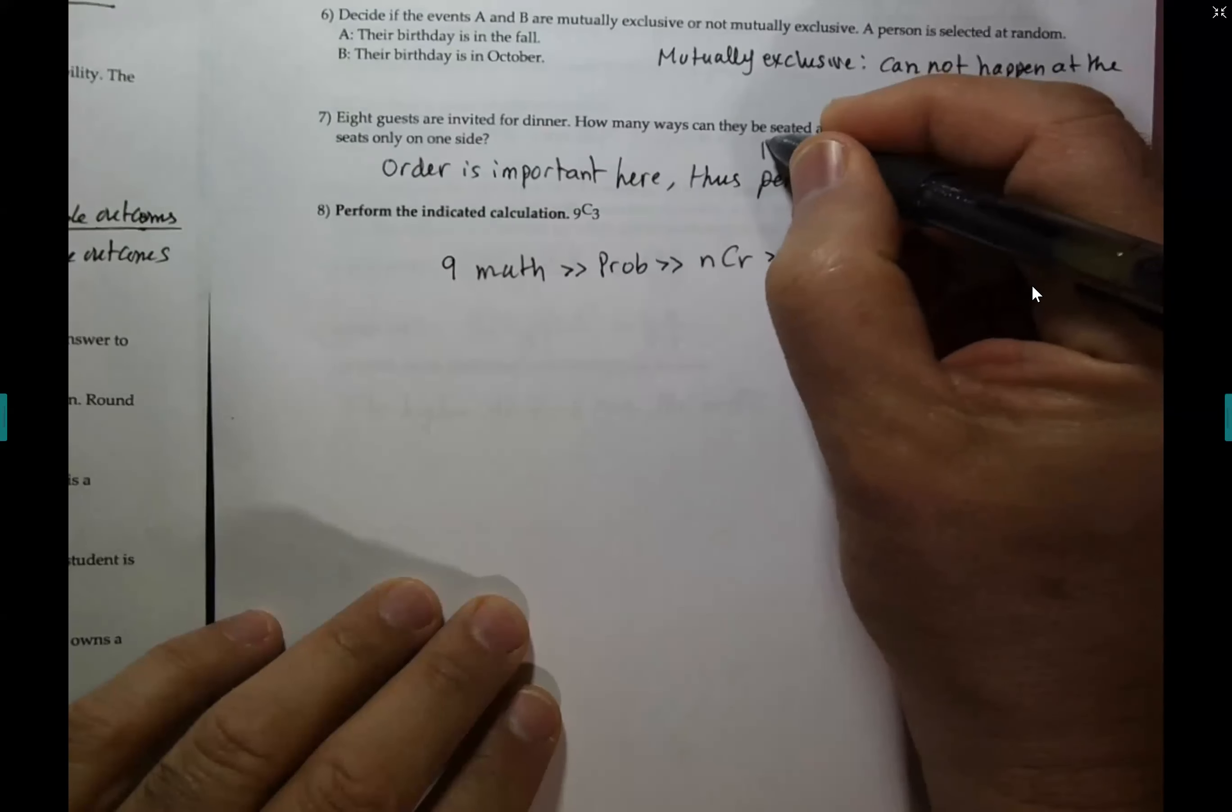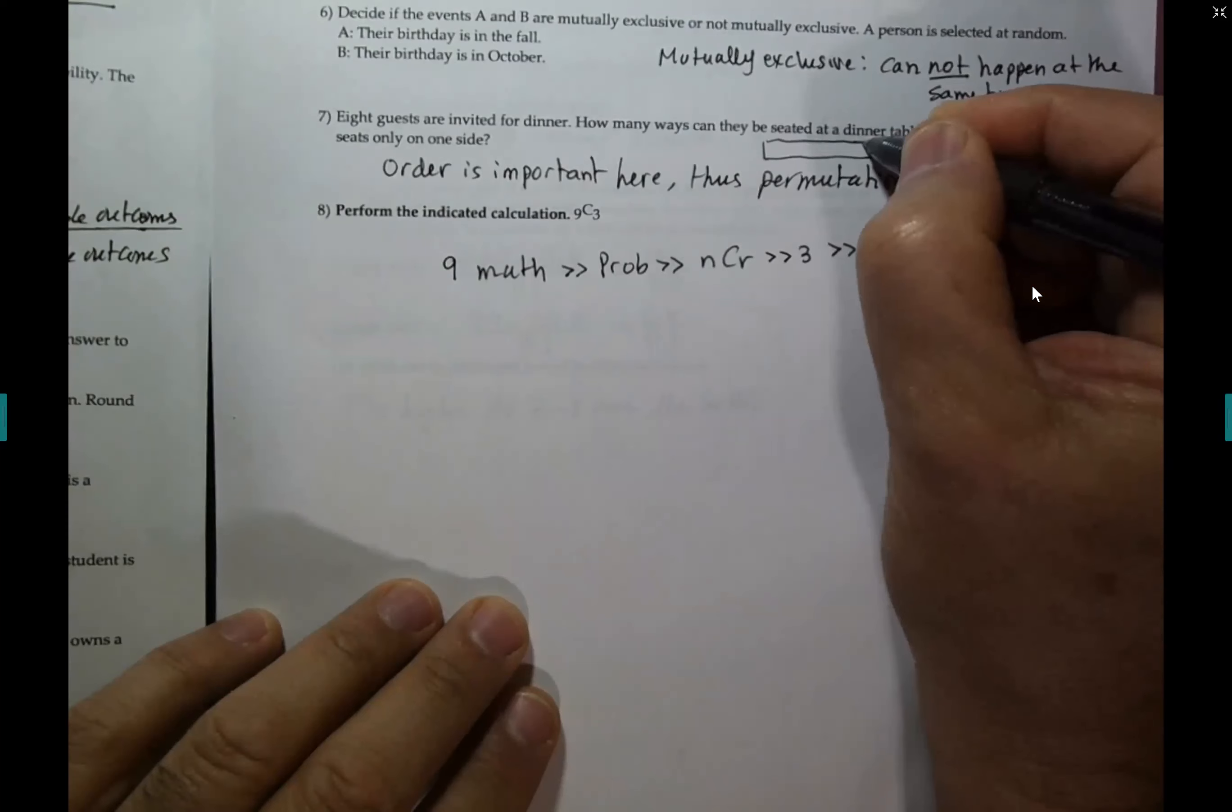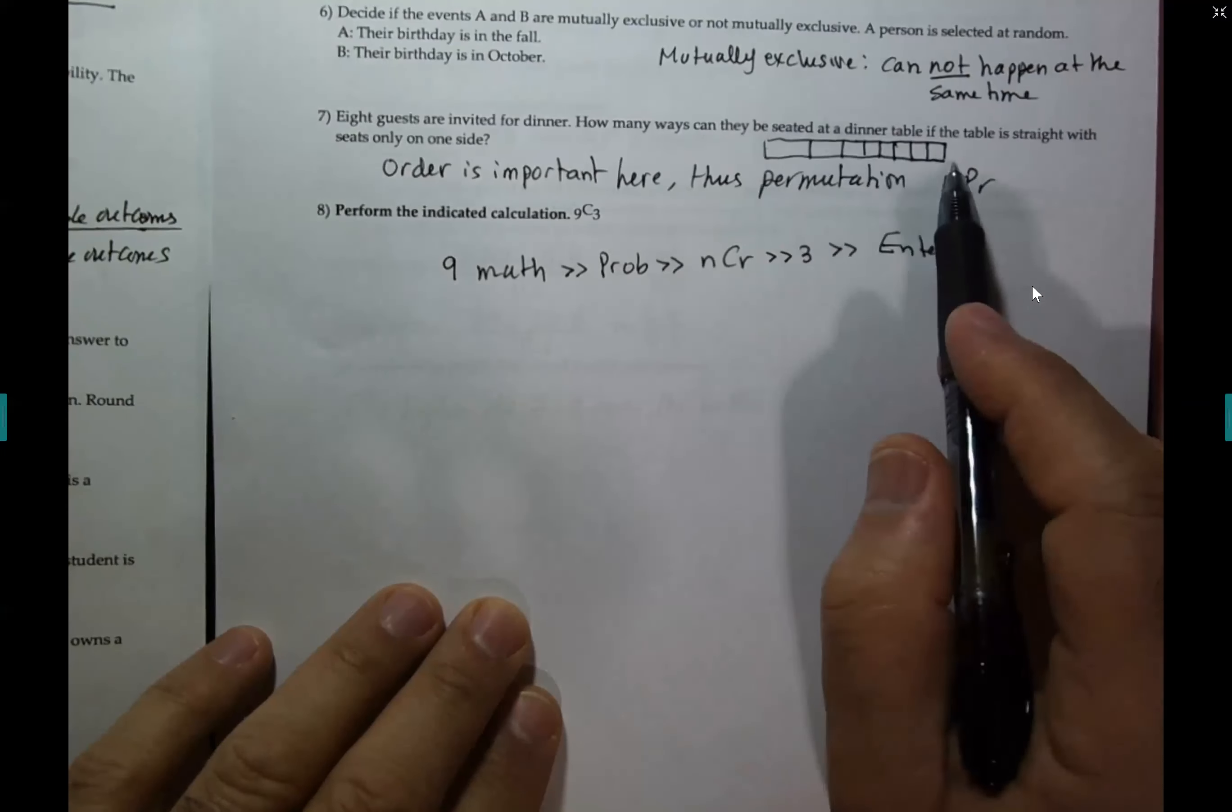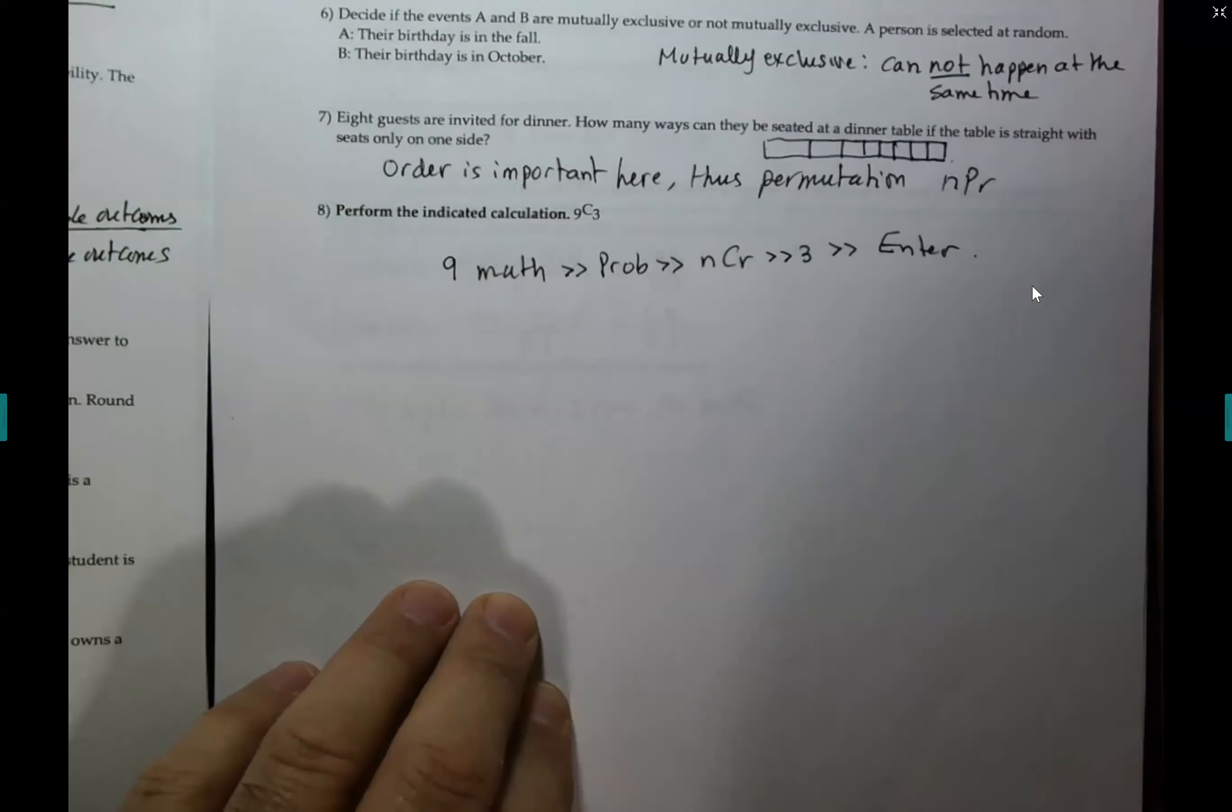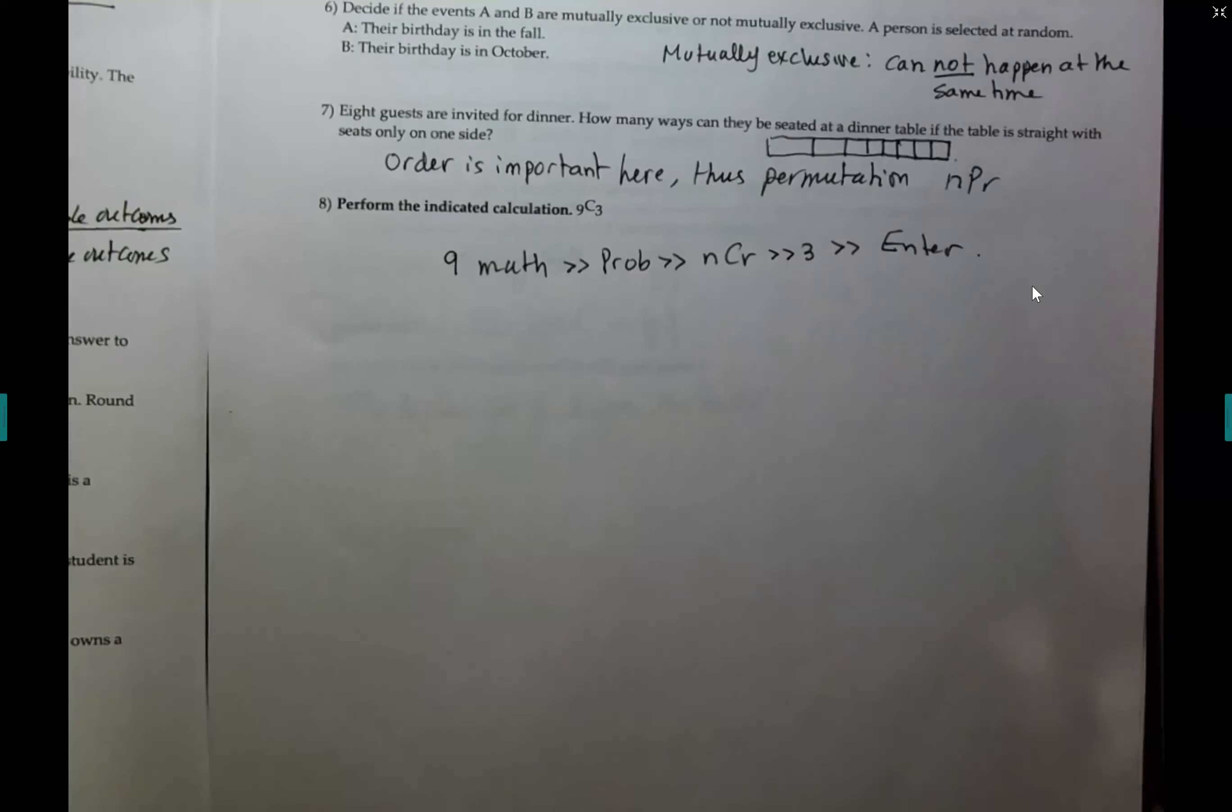Number seven, eight guests are invited for dinner. How many ways they can be seated at the dinner table if the table is straight with seats only on one side? So in how many ways you can seat eight people over a rectangular table? I gave you an example last time. One, two, three, four seats, five, six, seven, eight. Okay, the first person arrives. How many choices does the first person have to sit? He has eight choices. And then the next one is gonna have how many choices? Seven. And so on and so forth. And you know, when you are doing events at the same time, you multiply your outcomes, you don't add. You don't add eight plus seven plus six. You multiply so you get the answer.